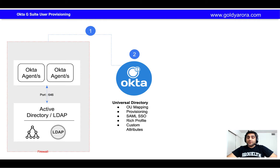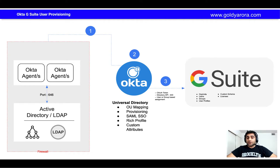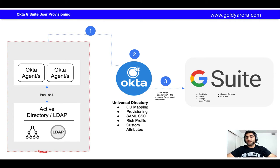Okta will now have all your user information and group information right in Okta Universal Directory, where you will be doing all the profile mappings, custom attributes, and other things. Then finally you will be pushing that information to Google Cloud — which can be Google Cloud Identity or G Suite — based on rules. For example, you could say if the user is part of XYZ organizational unit, provision that user in Google, or if the user is part of your Google users group in AD, create their account in Google.